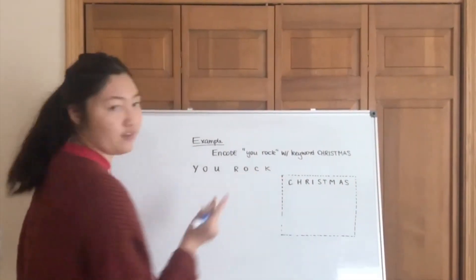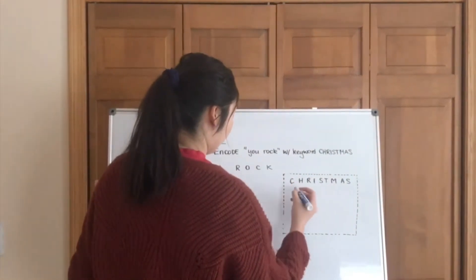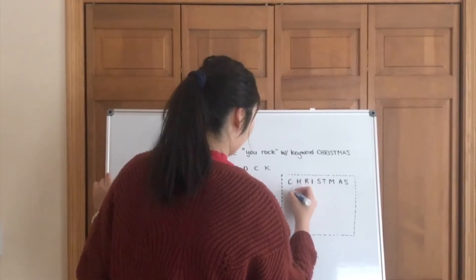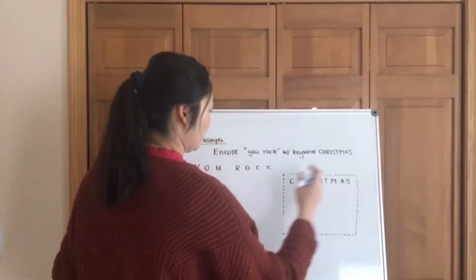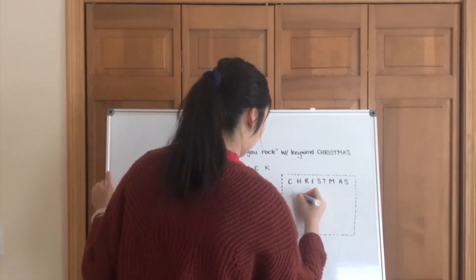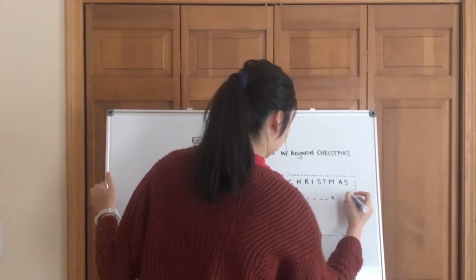Alright, so the first thing we're going to do is we're going to figure out the key. So with CHRISTMAS, the first thing we're going to do is we're going to line up the Morse code. Not to decode CHRISTMAS into Morse code, but you're going to put three dots, three dashes, and three Xs.